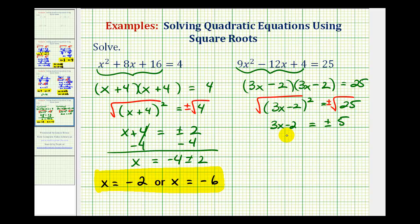So now we'll solve for x. We'll add 2 to both sides. So we have 3x equals 2 plus or minus 5. And then we'll divide both sides by 3.